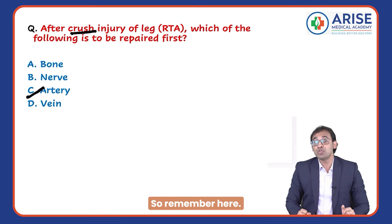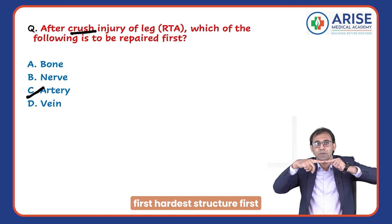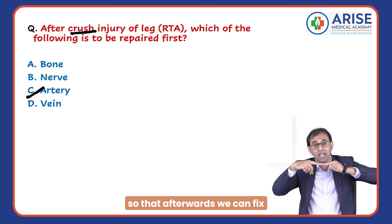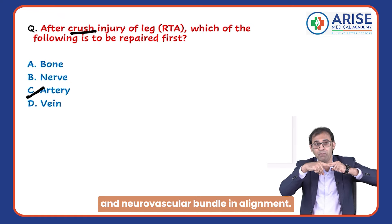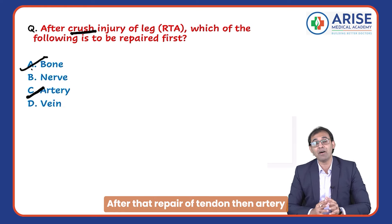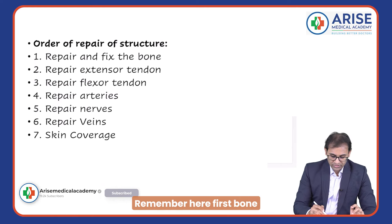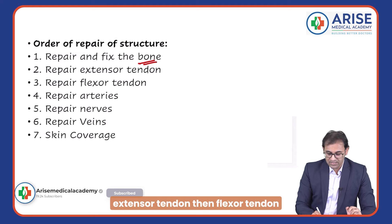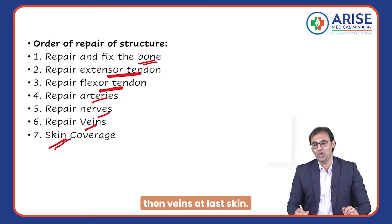So what we do is: repair the hardest structure first — bone is repaired first — so that afterwards we can repair all blood vessels and the neurovascular bundle in proper alignment. The correct order is: bone first, then extensor tendon, then flexor tendon, then arteries, then nerves, then veins, and finally skin. Very important question.